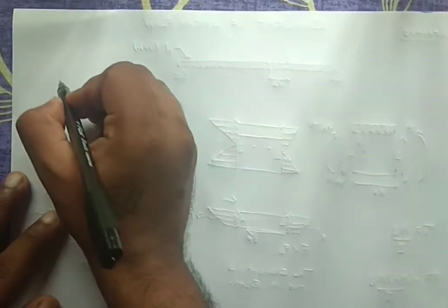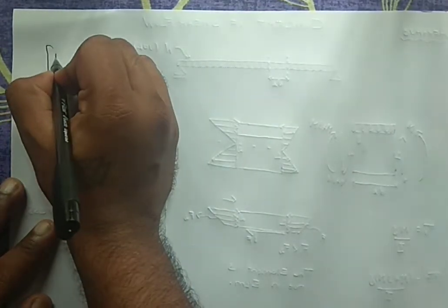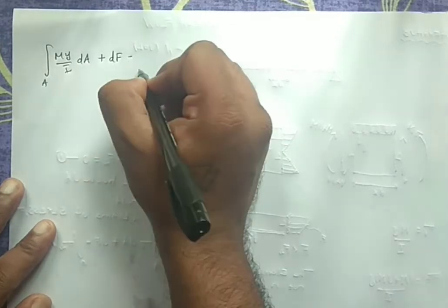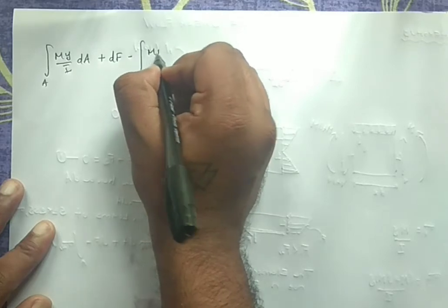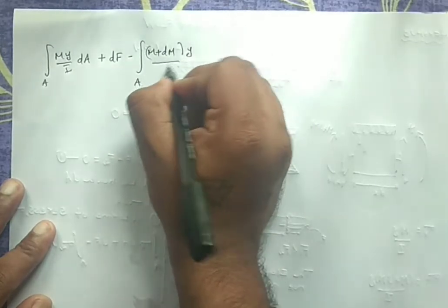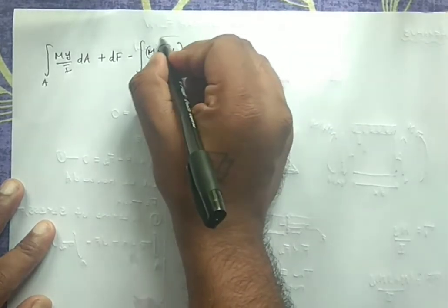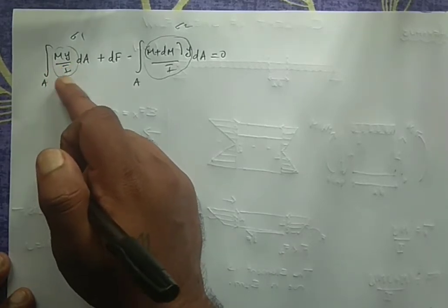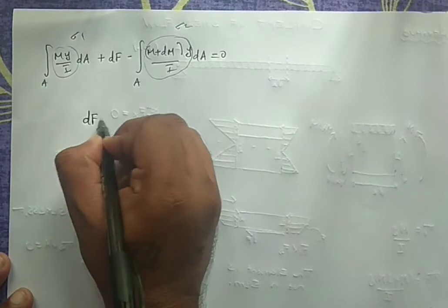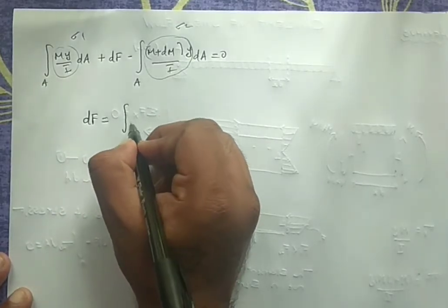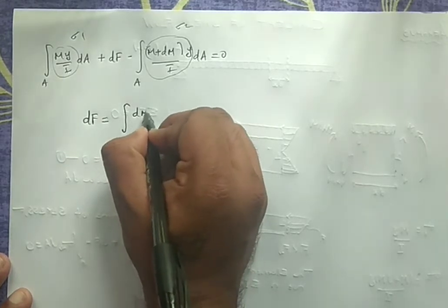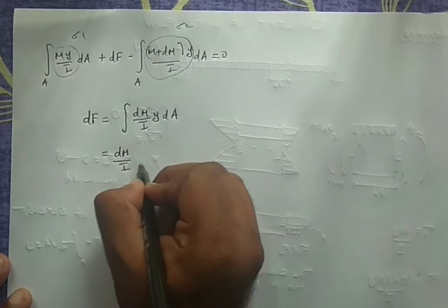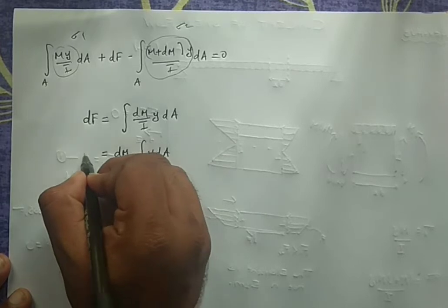Substituting the stress expressions: σ₁ = M·y / I and σ₂ = (M + dM)·y / I. The equilibrium equation becomes: the integral over area A of (M·y / I) · dA + dF − the integral over area A of (M + dM)·y / I · dA = 0. Cancelling the common M·y / I · dA terms, we get dF = (dM / I) · ∫y dA.